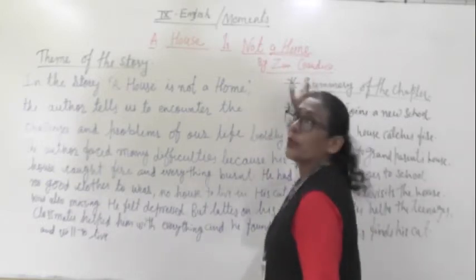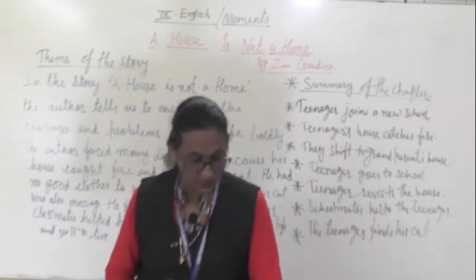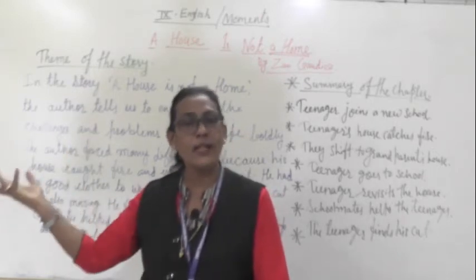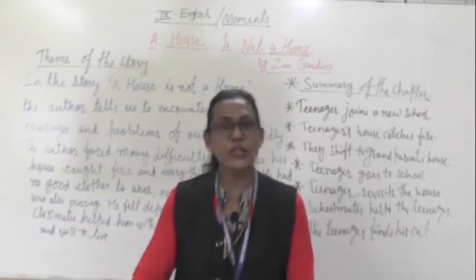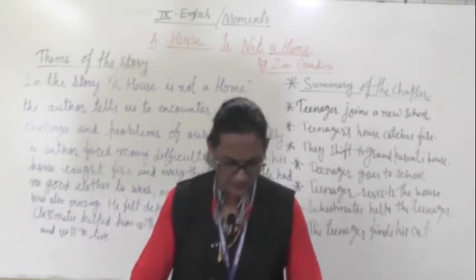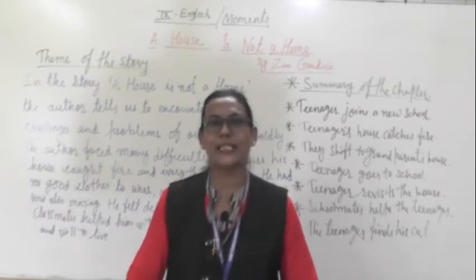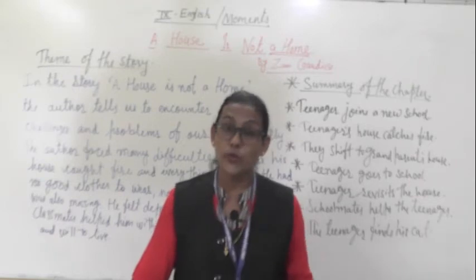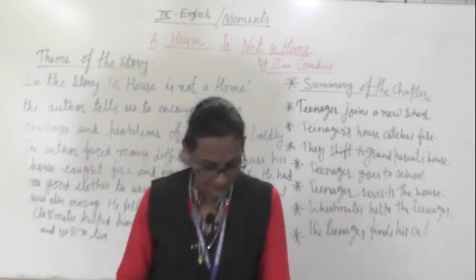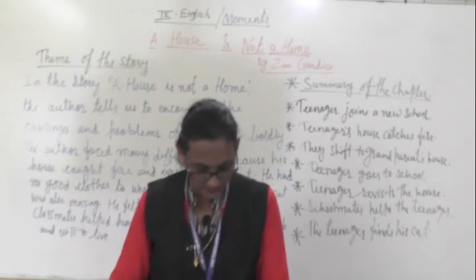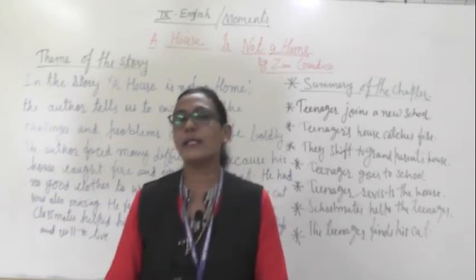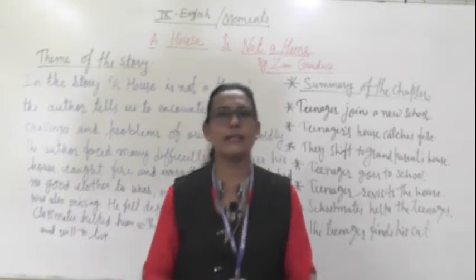Zan Gaudesio is the teenager. He is a high school student who joins a new school and misses his old school, teachers, classmates, and friends. The pet cat is very dear to the teenager — she is a red colored cat. The stranger lives a mile away from the teenager. She is very helpful, takes care of his pet cat, finds out the details of the owner, and gives the cat back to him.